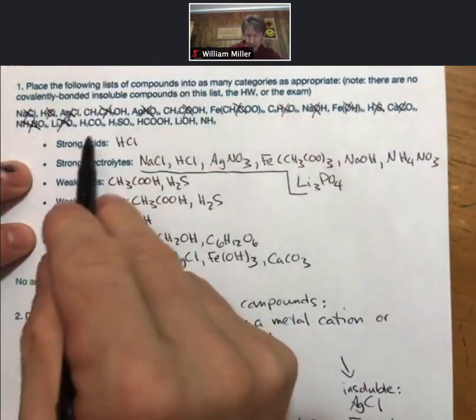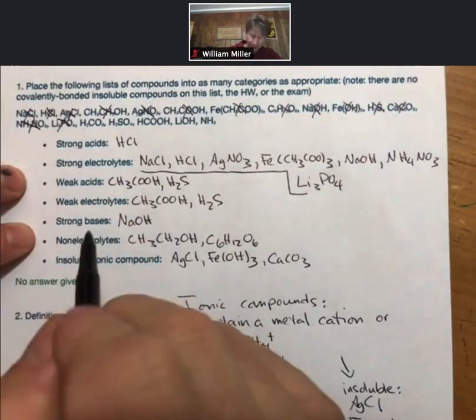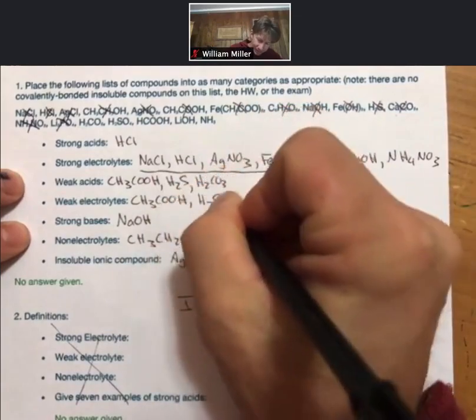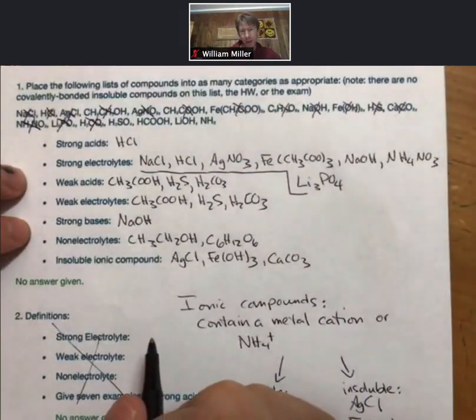Carbonic acid, H2CO3, has an H or more in the front and is not a strong acid. So it is a weak acid and therefore a weak electrolyte.